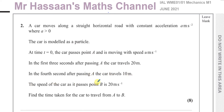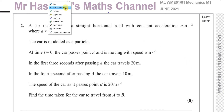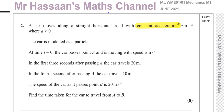The speed of the car as it passes point B is 20 meters per second. Find the time taken for the car to travel from A to B. The first key phrase to notice is constant acceleration, which means the SUVAT equations will apply throughout the entire journey from beginning to end.